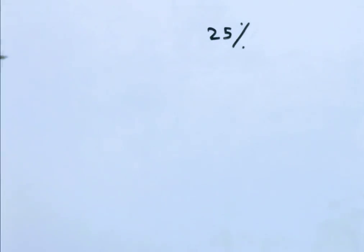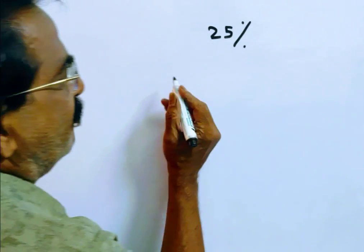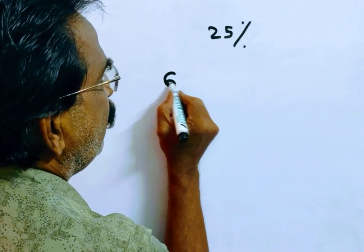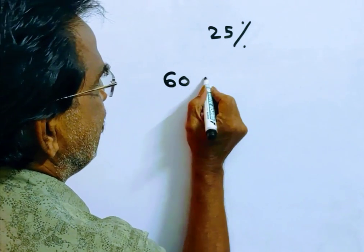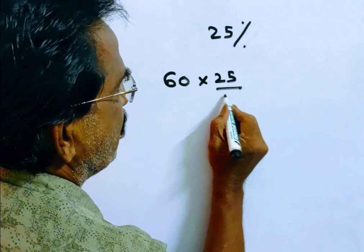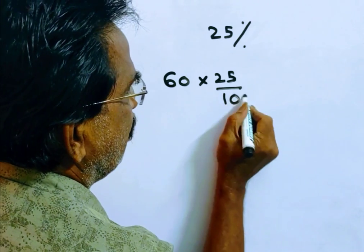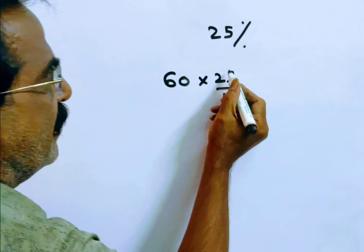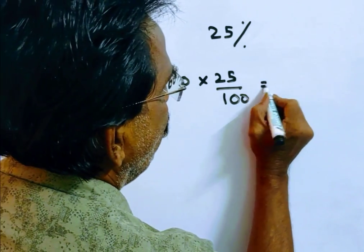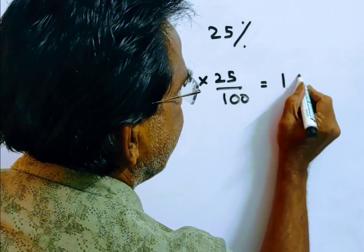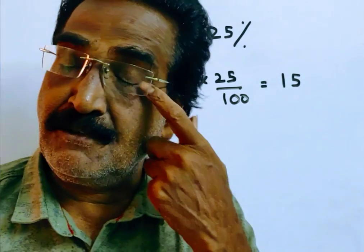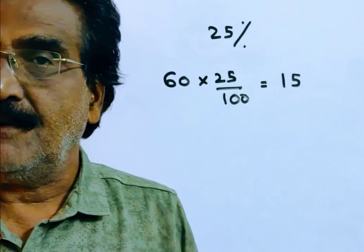Now let us see the reduction. What is the reduction? 25% of 60 is how much? 25% of 60 is Rs. 15. So, the price is reduced by Rs. 15.